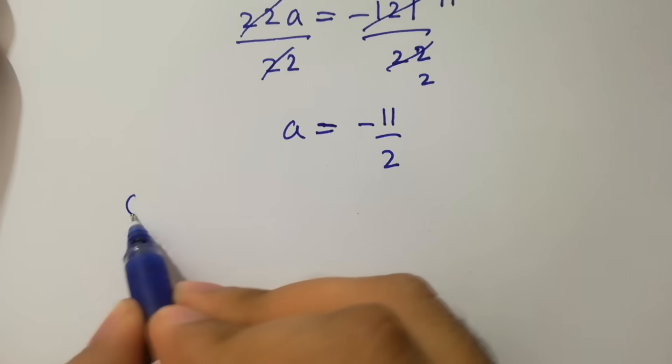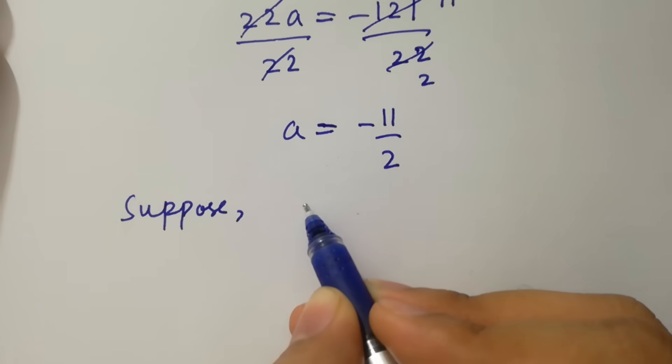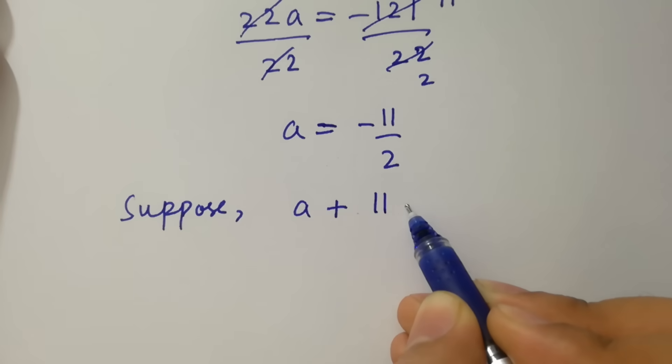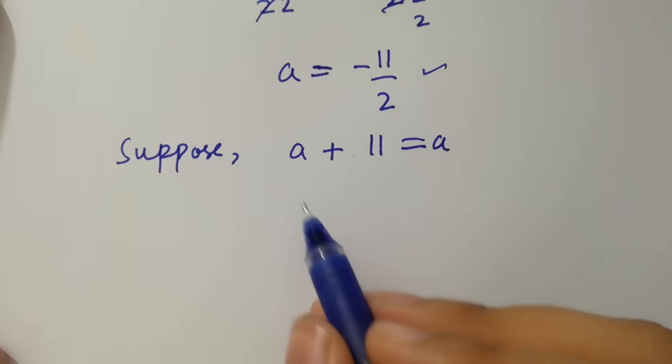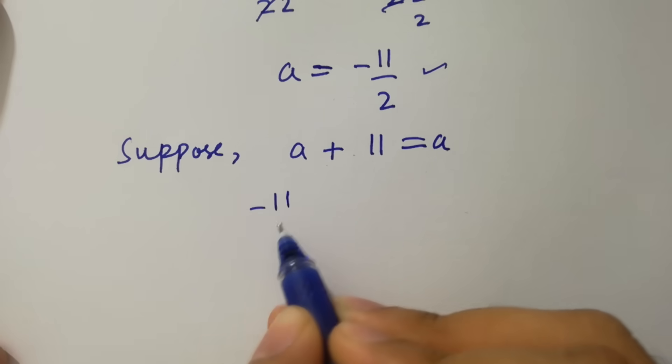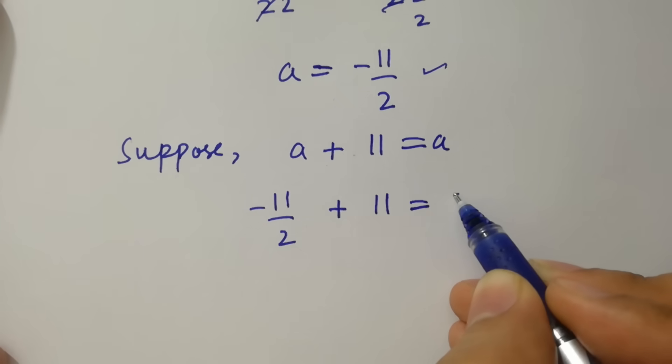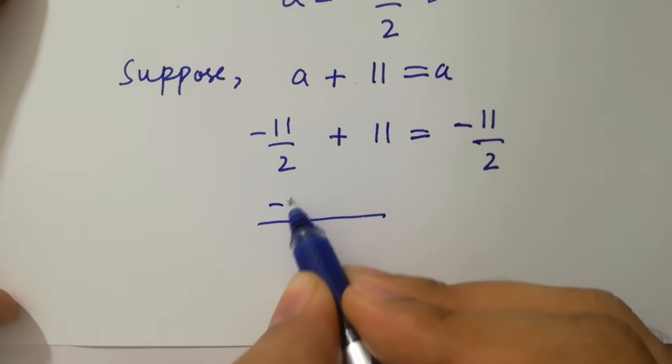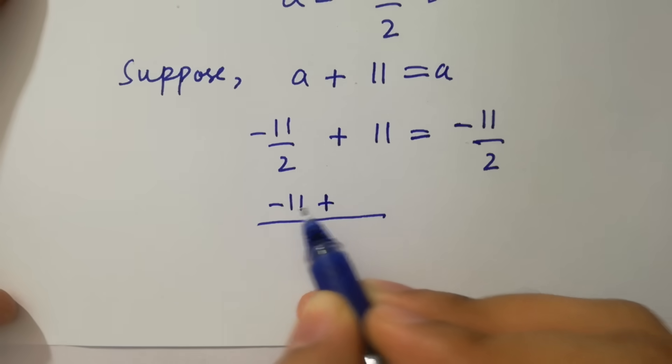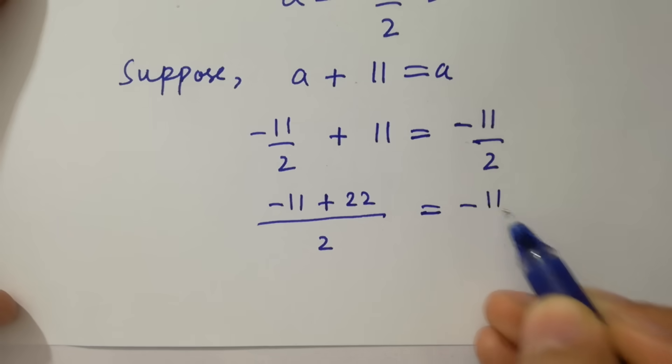Suppose a plus 11 equal to a. Put the value of a, minus 11 over 2 plus 11 equal to minus 11 over 2. Take LCM, we have minus 11 plus 11 times 2 is 22 equal to minus 11 over 2.